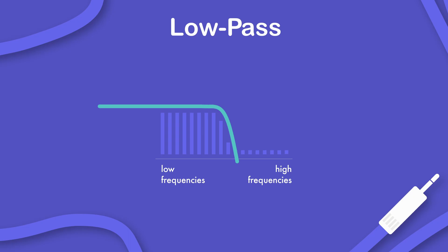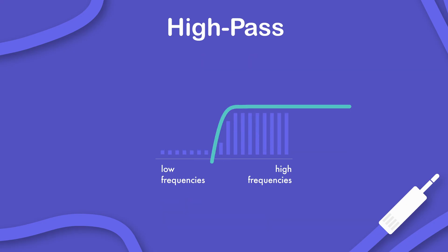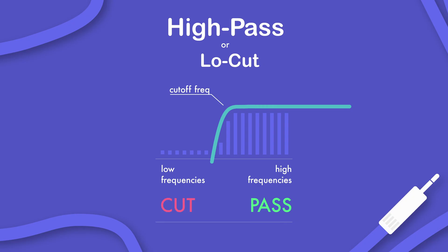A low pass filter, also referred to as high cut, allows all frequencies below the cutoff frequency to pass and attenuates the level of the frequencies above it. A high pass filter, also referred to as low cut, does exactly the opposite — it allows all frequencies above the cutoff frequency to pass and attenuates the frequencies below it.